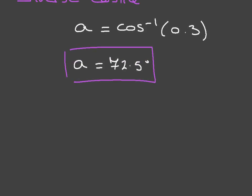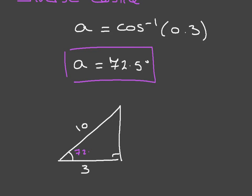It's good practice to complete the diagram we were given and add the result we have just found. We had a right-angle triangle where one of the side lengths was 3, the hypotenuse was 10, and we have just found that the interior angle A is 72.5 degrees.